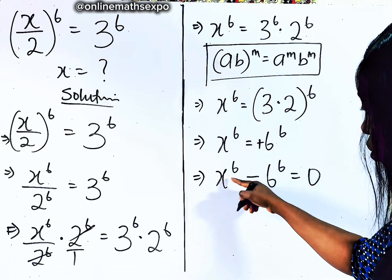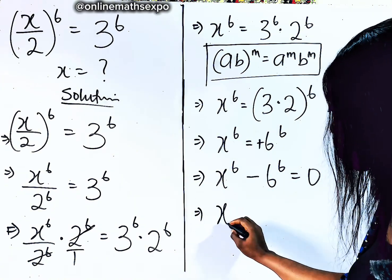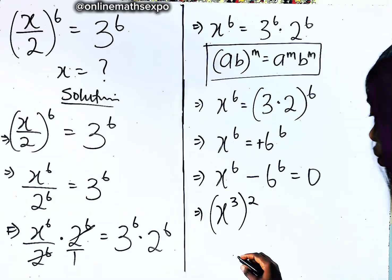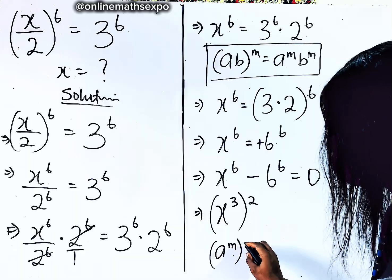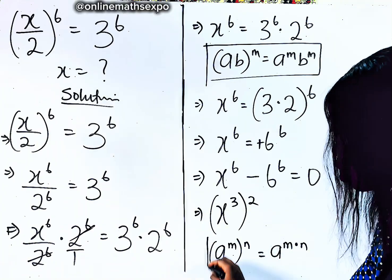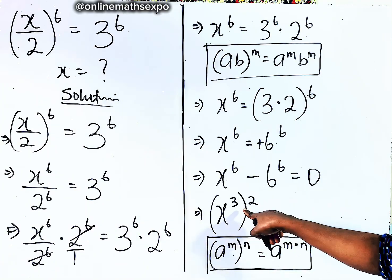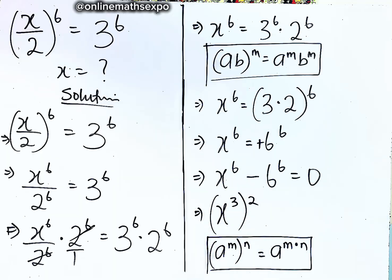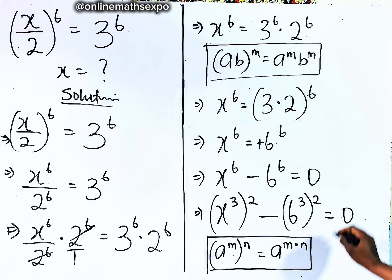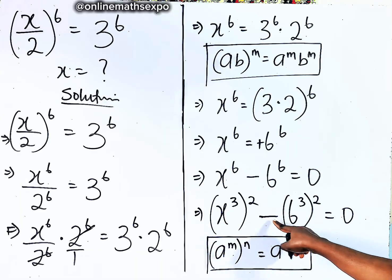Now we can rewrite this — adjusting to give us x cubed, raised to the power of 2. We know that for every a to the power of m, raised to the power of n, it equals a to the power of m times n. So multiplying 3 and 2 gives you 6, allowing us to rewrite x to the power of 6 as (x cubed) squared. We can do the same for the other term: (6 cubed) squared equals 0. Did you observe anything? This has led us to the difference of two squares.